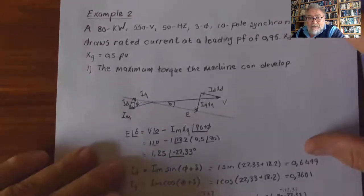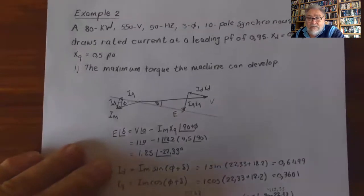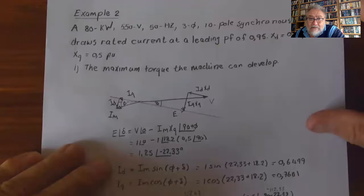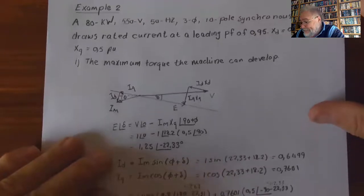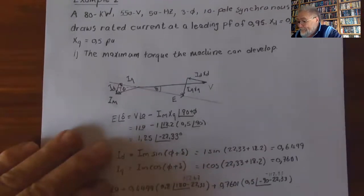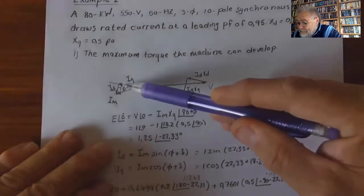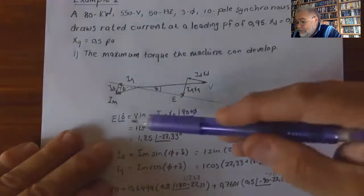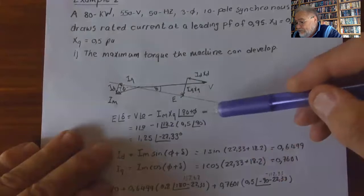Another example: An 80 kW, 550 V, 50 Hz, three-phase, 10-pole synchronous motor draws rated current at a leading power factor of 0.95, with Xd = 0.8 and Xq = 0.5 per unit. We must determine the maximum torque the machine can develop. First, draw the phasor diagram — leading power factor — showing angles φ and δ. E = V − Im·Xq∠(90 + δ) gives 1.25∠22.33°.